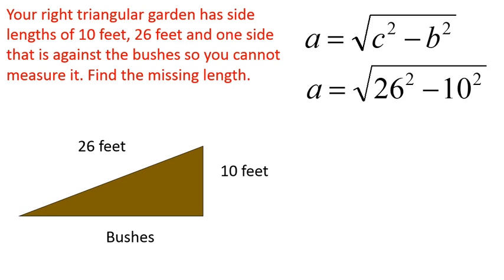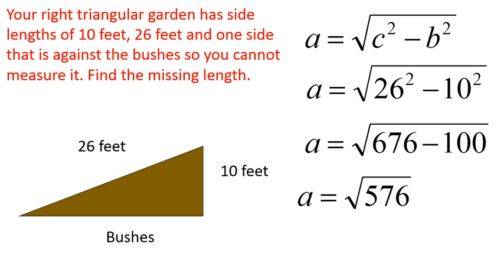All right, so c² minus b² is 676 minus 100, which leaves us with a is equal to the square root of 576. And the square root of 576 is 24. 24 feet, again, we measure in positive numbers, so it wouldn't be plus or minus 24 feet. It would just be 24 feet. So, 24 feet is the length of the side of this garden that is in the bushes, so I can't put a tape measure to it.